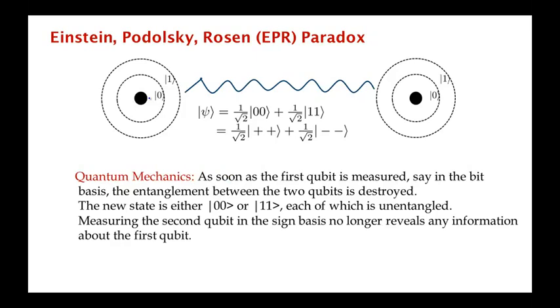Now, what does standard quantum mechanics say about all this? Well, what quantum mechanics says is that as soon as the first qubit is measured, let's say in the bit basis, the entanglement between the two qubits is destroyed. Because the new state is now either zero zero or one one, in each of these two states you can say exactly what the state of the first qubit is and the state of the second qubit is. So, if the state is zero zero, the state of the first qubit is zero and the second qubit is zero. So, these are completely unentangled states.